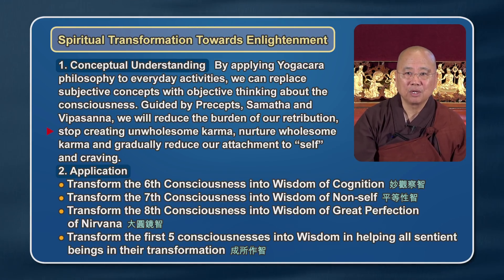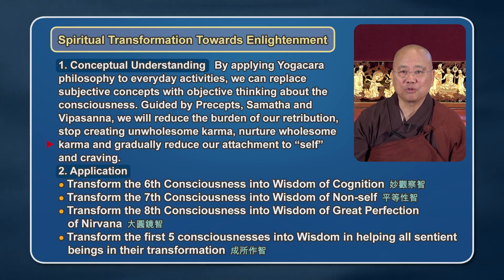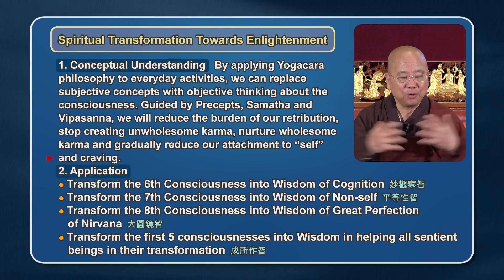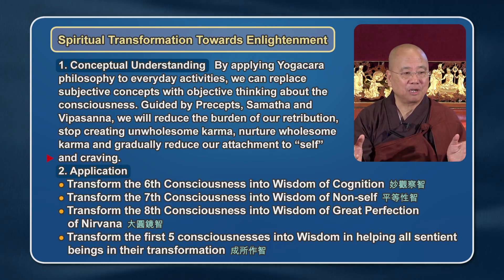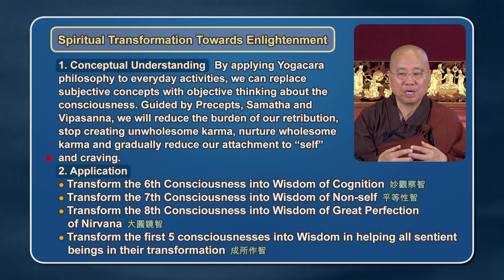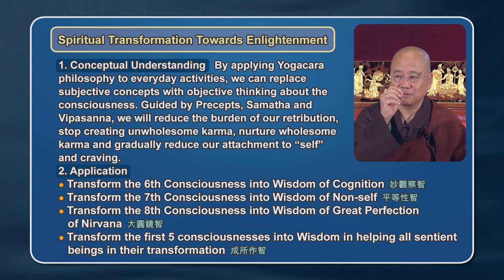We will reduce the burden of our retribution if guided by all these. Stop creating unwholesome karma, nurture and build up wholesome karma, and gradually reduce our attachment to self and craving. Guided by precepts, samatha, and vipassana, our first lesson is to gradually learn how to reduce and eliminate the self — as the Diamond Sutra in the second chapter discusses. Reduce and gradually eliminate your ego, your craving. Everybody has ego attachment; some are stronger than others, and you may not even know about it.